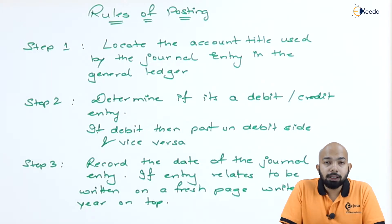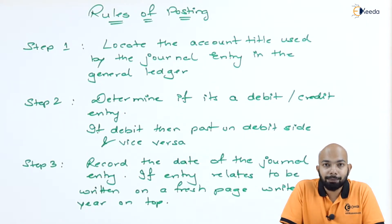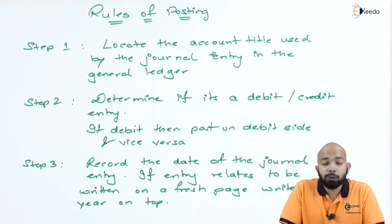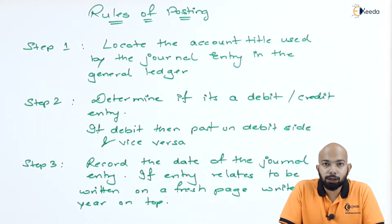When we speak about ledger balance, we have already understood how the specimen of that specific ledger account looks like. We know that there are four columns on each side — that is on the debit side as well as on the credit side. We will now figure out in detail how to go ahead with the formatting or preparation of ledger account balances, or the rules towards posting.